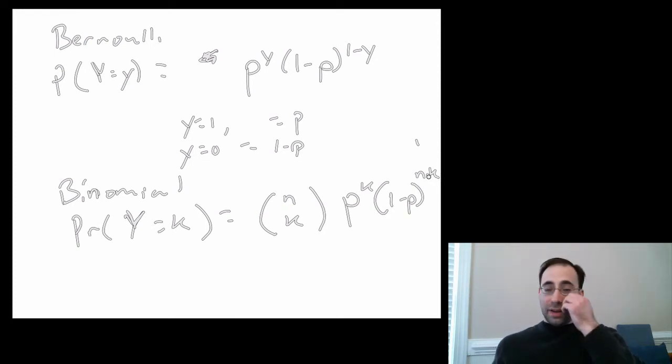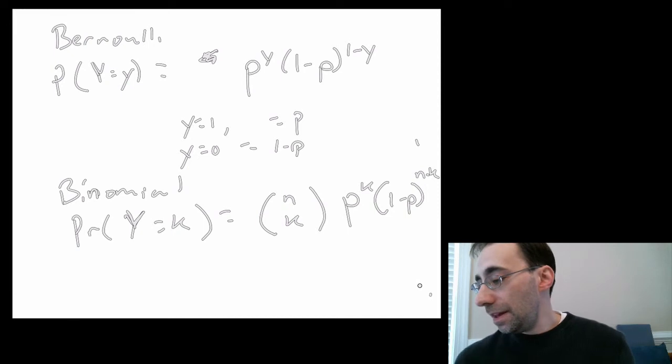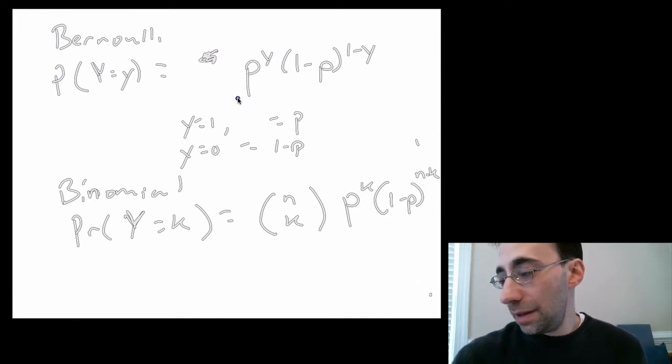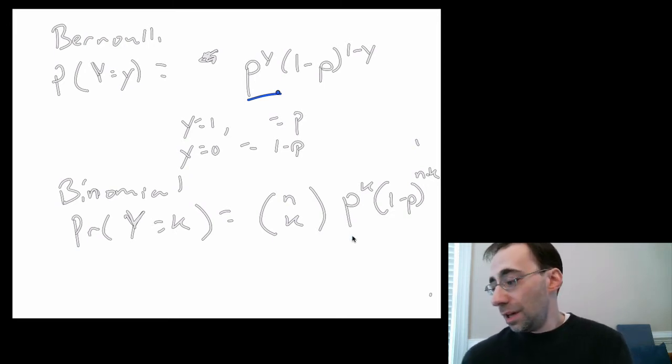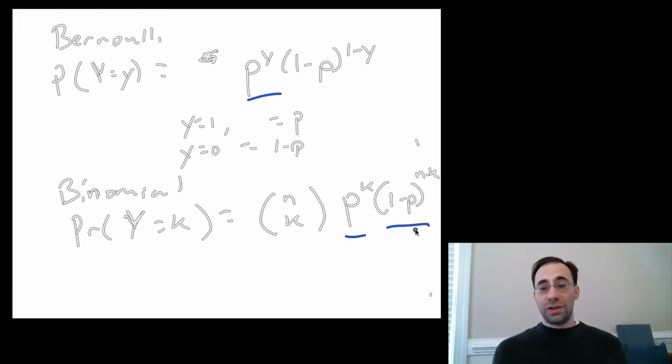times one minus p to the n minus k. Now you can see very clearly, I hope, the relationship between this and the Bernoulli equation. Here you have the probability of drawing a single positive one, so it's p to the one, or p to the zero, depending on if you draw one or not.